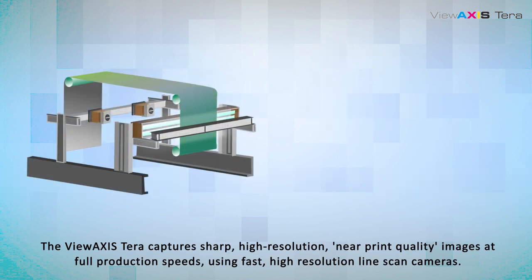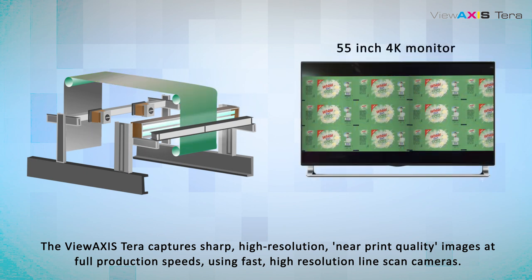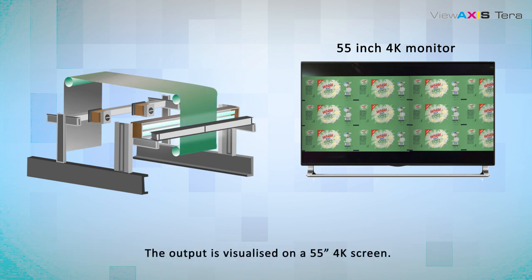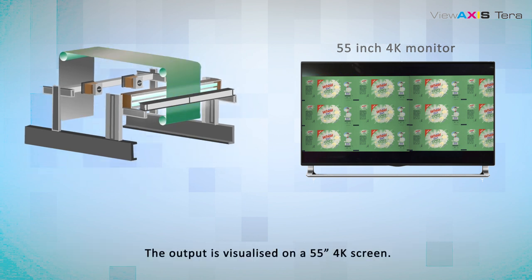The ViewAxis Terra captures sharp, high-resolution, near-print quality images at full production speeds using fast, high-resolution line-scan cameras. The output is visualized on a 55-inch 4K screen.